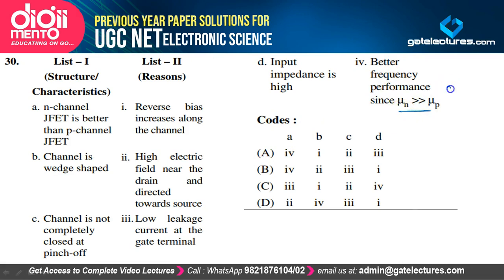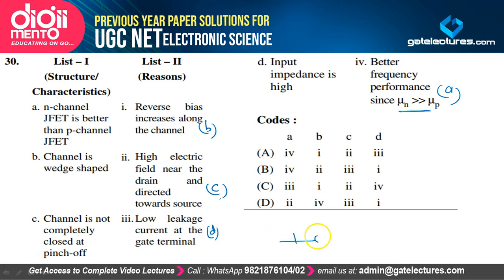N-channel JFET is better than P-channel JFET for the following reasons: better frequency performance since μn > μp (A→4); channel is wedge-shaped because reverse bias increases along the channel (B→1); channel is not completely closed at pinch-off due to the high electric field near the drain directed toward the source (C→2); input impedance is high because leakage current at the gate terminal is nearly zero (D→3). Option A is the correct option.